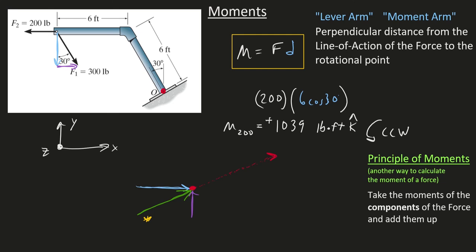Let's calculate the two components of our 300-pound force. 300 is the hypotenuse, so 300 times cosine of 30 is approximately 260, and 300 times sine of 30 is 150. Be careful: these components are just smaller parts of the overall force applied at the same point. Don't be fooled into thinking the 150 component acts at the bottom of the triangle — it's actually acting at the same point. We draw that right triangle just to split the 300 into components.